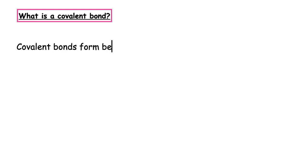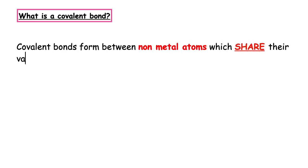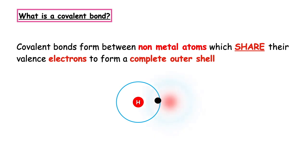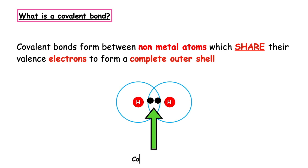Covalent bonds form between non-metal atoms which share their valence electrons to form a complete outer shell. The overlap between the orbitals and where the electrons are shared is known as a covalent bond.